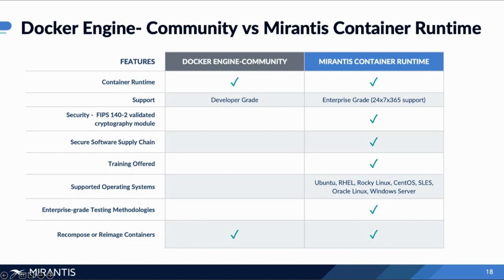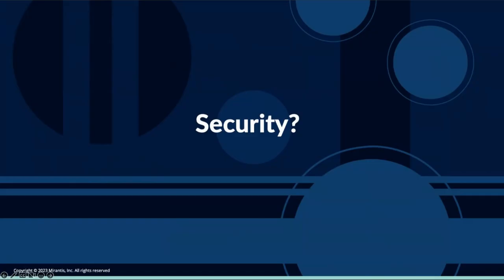According to the Sysdig 2023 Cloud-Native Security and Usage Report, an alarming 87% of container images running in production have critical or high-severity vulnerabilities — up from 75% from a year ago. After digging a little deeper into these vulnerabilities, really only 25% are exploitable. But that's still a concern, because none of us would like to be part of that 25%.